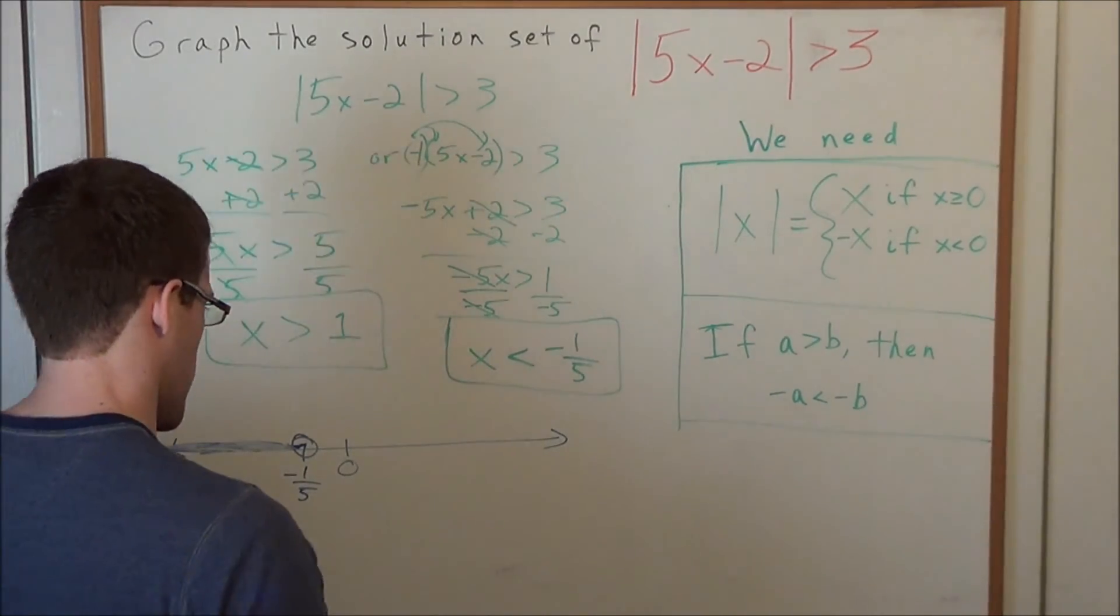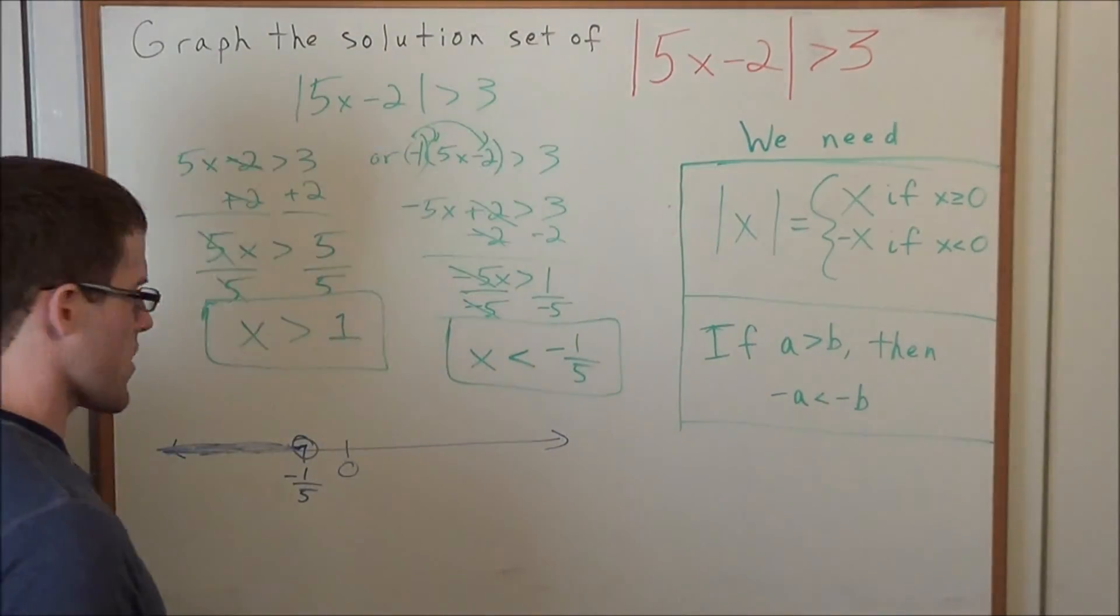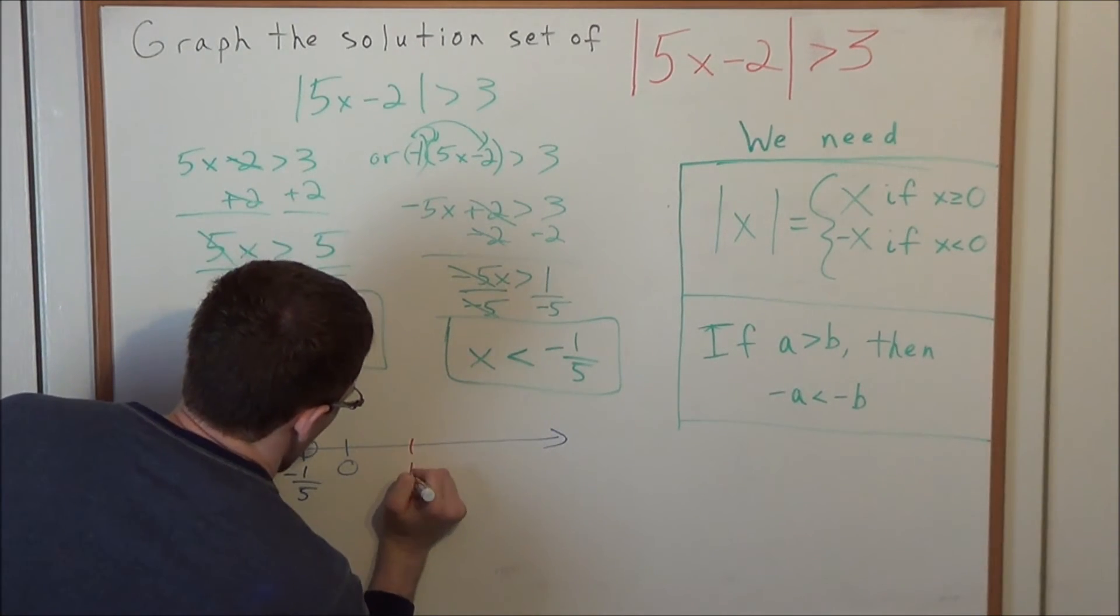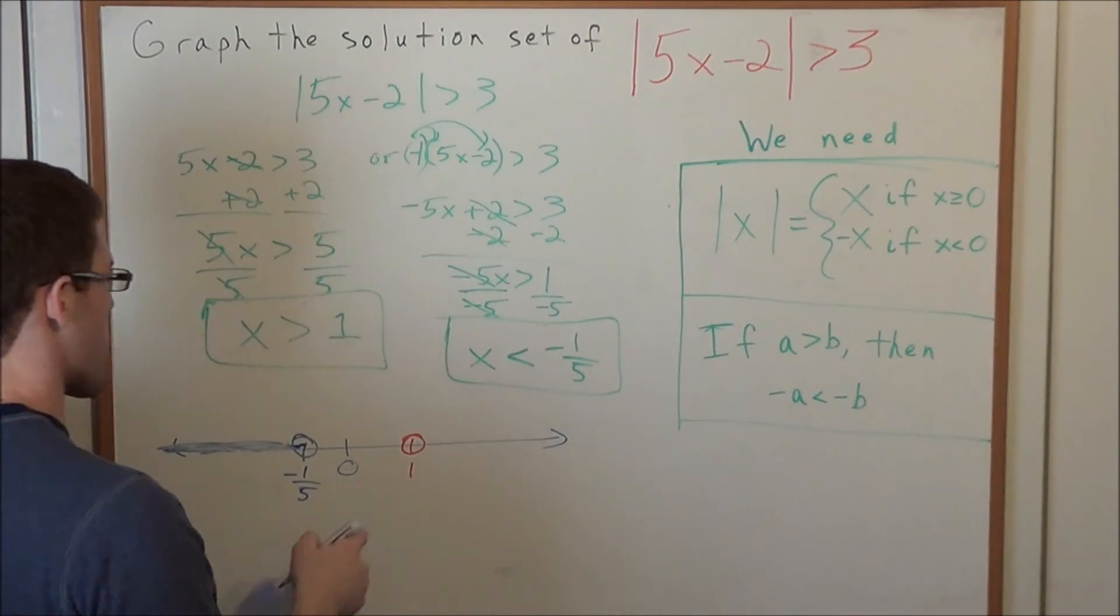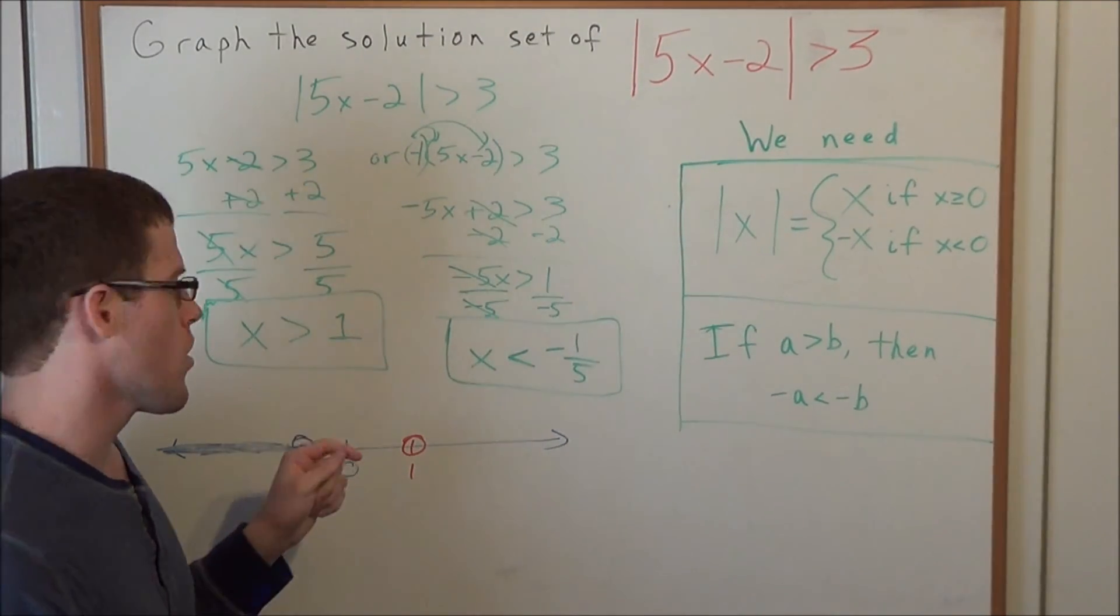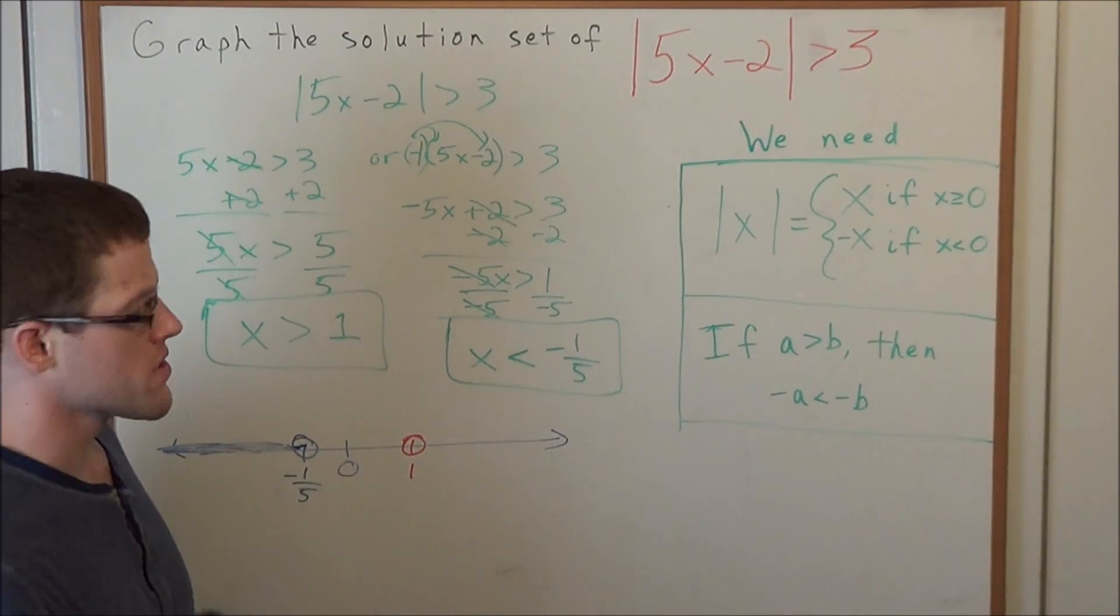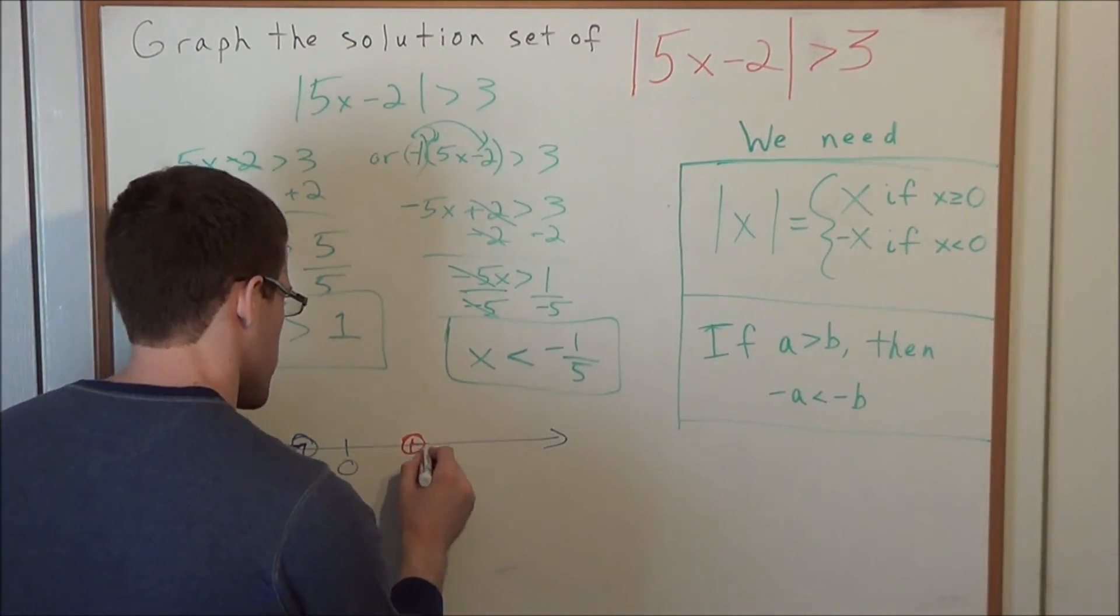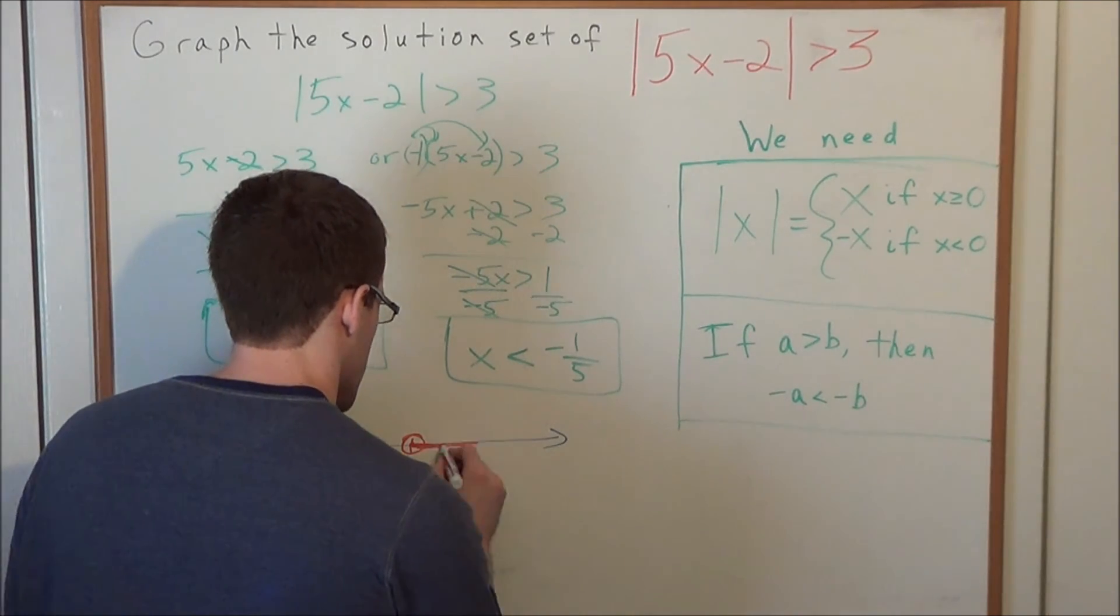And now what is the other side? We have that x is greater than a positive 1. So we go ahead and we locate the point 1. And remember it's going to be an open circle in this case also because we have that x is strictly greater than 1. 1 cannot be greater than itself, so that's why we do not include this end point here. And everything greater than will go in the direction this way.